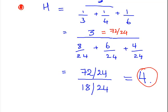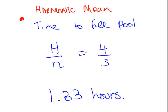But we're using three machines. So how long does it take to fill up the swimming pool? H over N. 4 hours divided by 3. So the answer is 1.33 hours.